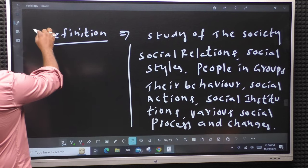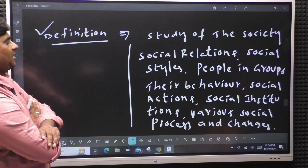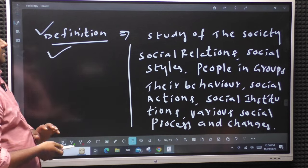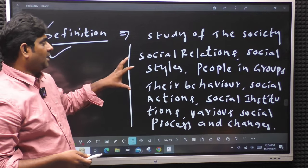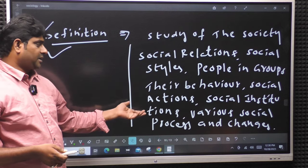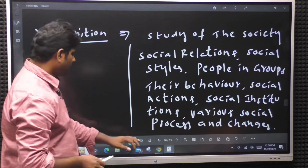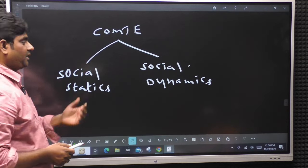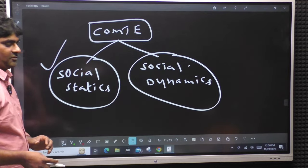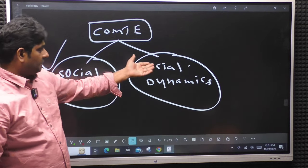Sociology definition: the study of society, social relations, social styles, people in groups, their behavior, social actions, social institutions, and various social processes and changes in them is known as sociology. That is why we call Comte the father of sociology. Comte defined social statics as the study of the social system, and social dynamics as the study of change of the social system - dynamics means change from generation to generation.